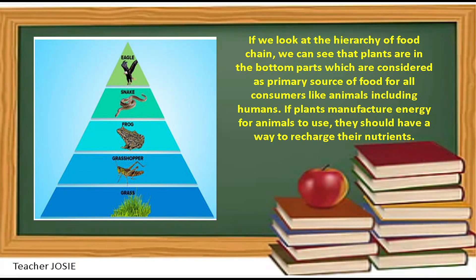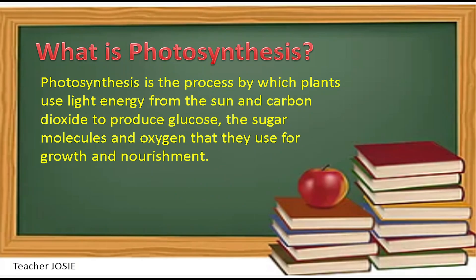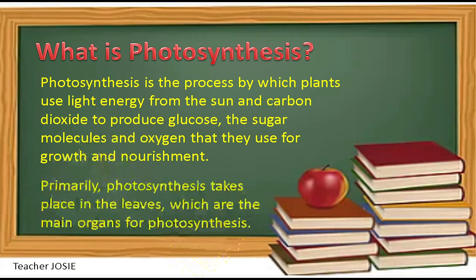If we look at the hierarchy of the food chain, we can see that plants are in the bottom parts, which are considered as the primary source of food for all consumers like animals, including humans. If plants manufacture energy for animals to use, they should have a way to recharge their nutrients. Photosynthesis is the process by which plants use light energy from the sun and carbon dioxide to produce glucose.